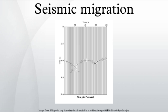Seismic migration is the process by which seismic events are geometrically relocated in either space or time to the location the event occurred in the subsurface rather than the location that it was recorded at the surface, thereby creating a more accurate image of the subsurface.